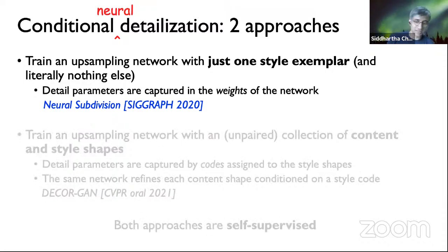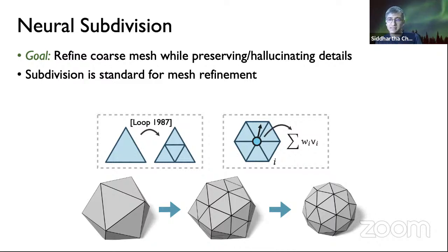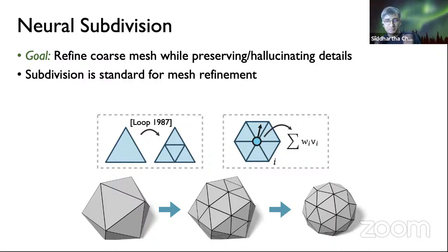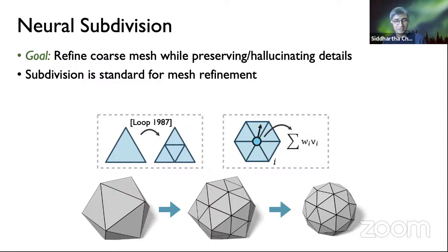The first work is neural subdivision. Our goal is to refine a coarse triangle mesh while preserving and hallucinating the necessary details, going from a very coarse resolution mesh and recursively refining it — either preserving detail already present in the coarse shape or hallucinating it if the data prior says it should be there.